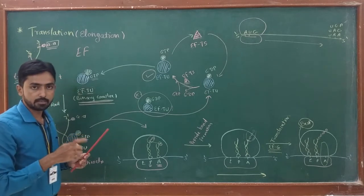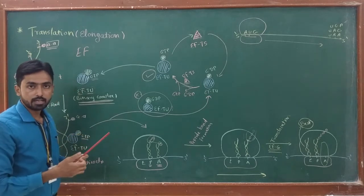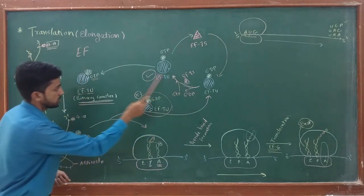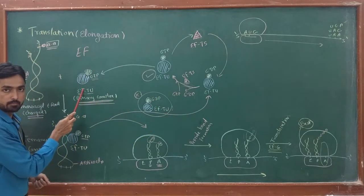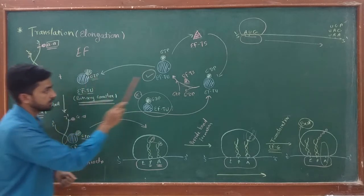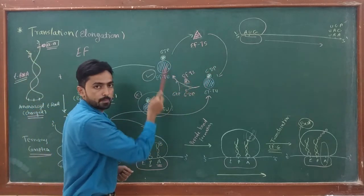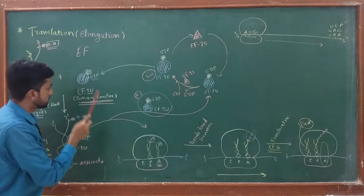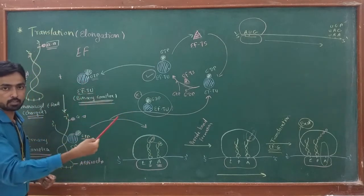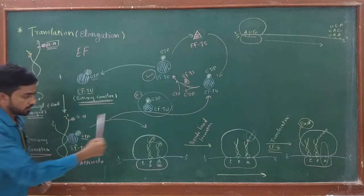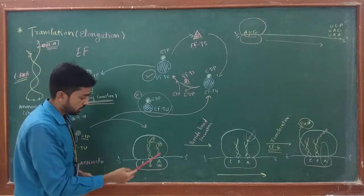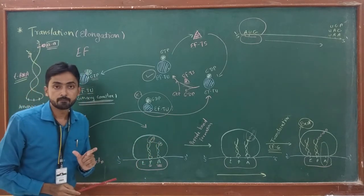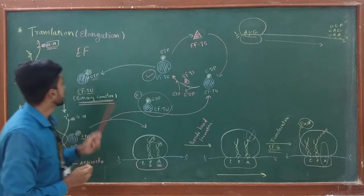Two cycles run simultaneously during the elongation process. The first is the EF-TU-GTP cycle, and the second is the EF-Ts cycle. Due to this cycling process, EF-TU is continuously reactivated and continuously transfers new tRNA to the A site of the ribosome. This is the first sub-stage of elongation.